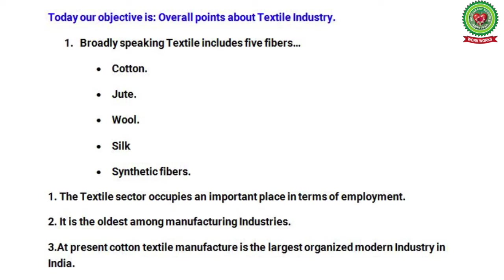Our objective today is an overall view of the textile industry. Broadly speaking, textile includes five fibers: cotton, obtained from cotton yarn; jute, from jute yarn; wool; silk — both wool and silk yarns come from animals — and synthetic fiber. These are the five basic textiles.